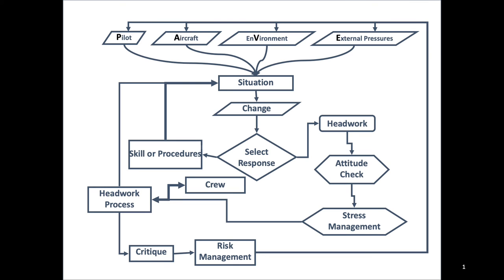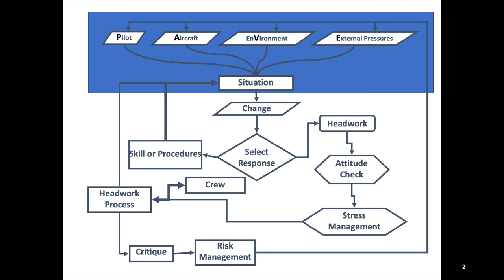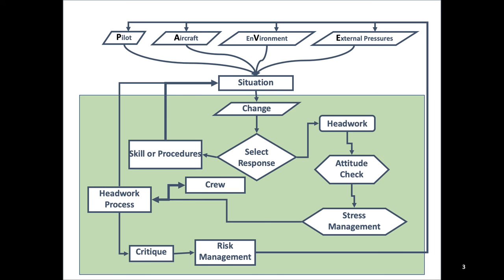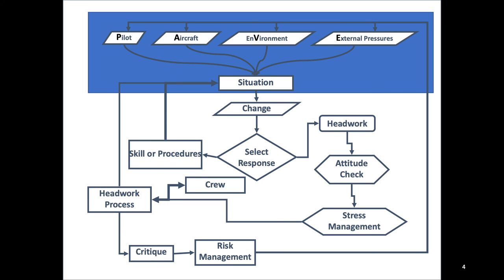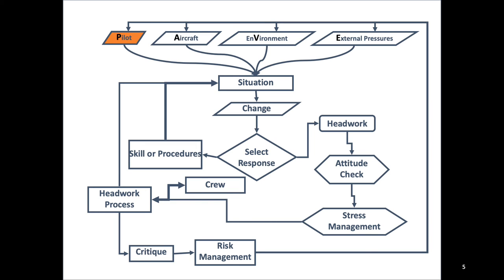Welcome back. This is the first of several videos covering this aeronautical decision-making flowchart. The top part of the flowchart revolves around perceiving risk, which can fall into any one of four categories: the pilot, the aircraft, the environment, and the external pressures. Every situation we encounter as a pilot is the result of a combination of these four things. We're going to start by focusing on the pilot and what the potential risks are specific to the pilot.